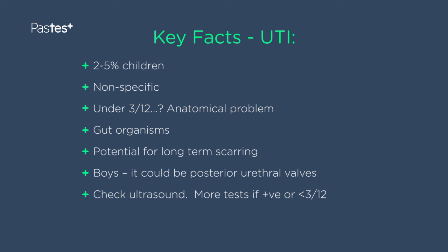Key facts about UTI in children: it's quite common, with two to five percent of children getting one at some point. It's more common in girls when older but equal in both sexes in tiny babies. Symptoms are usually non-specific when very young — dysuria won't be seen until over age five; in babies you might just see vomiting, diarrhoea, and fever. In very young children with a UTI you should always consider an underlying anatomical problem or vesico-ureteric reflux. UTIs can cause long-term renal scarring up to age seven. In boys, posterior urethral valves may impair urine flow and predispose to UTI.